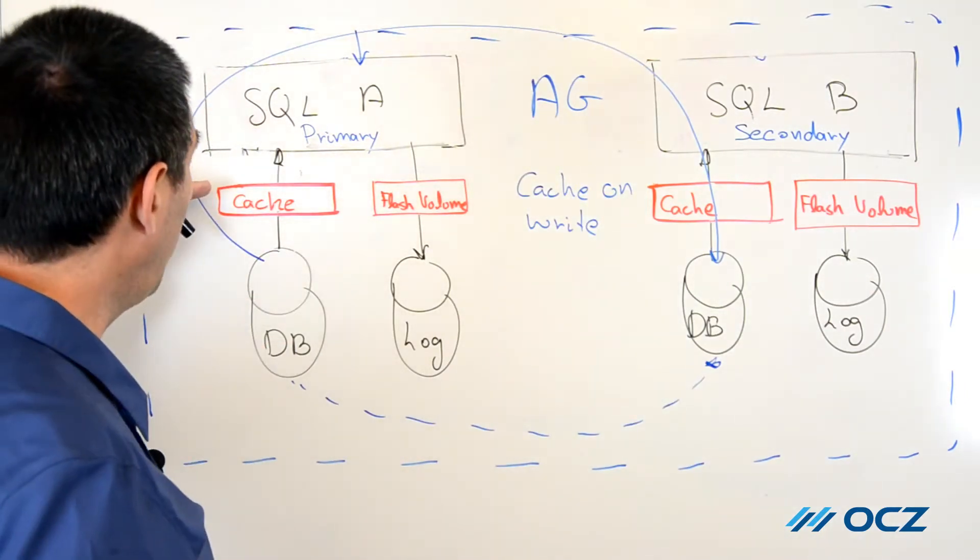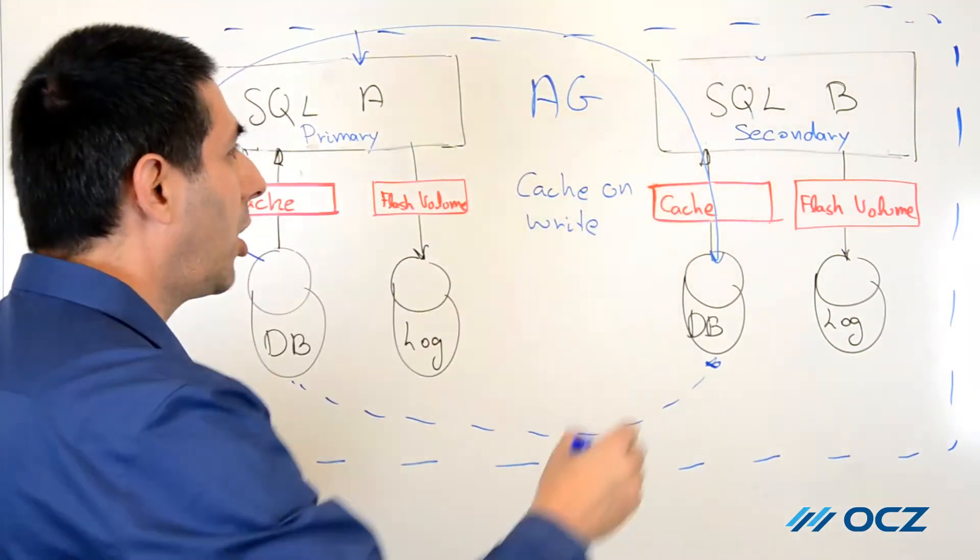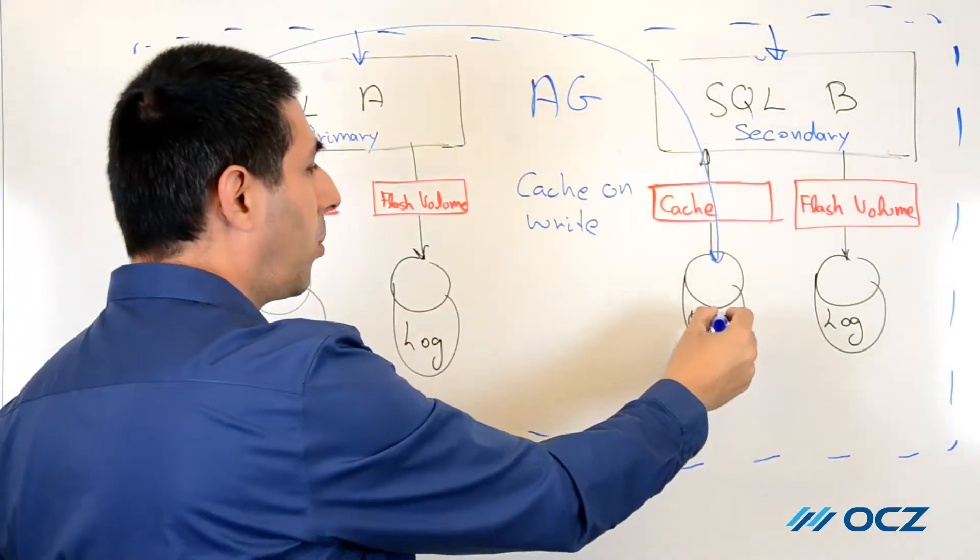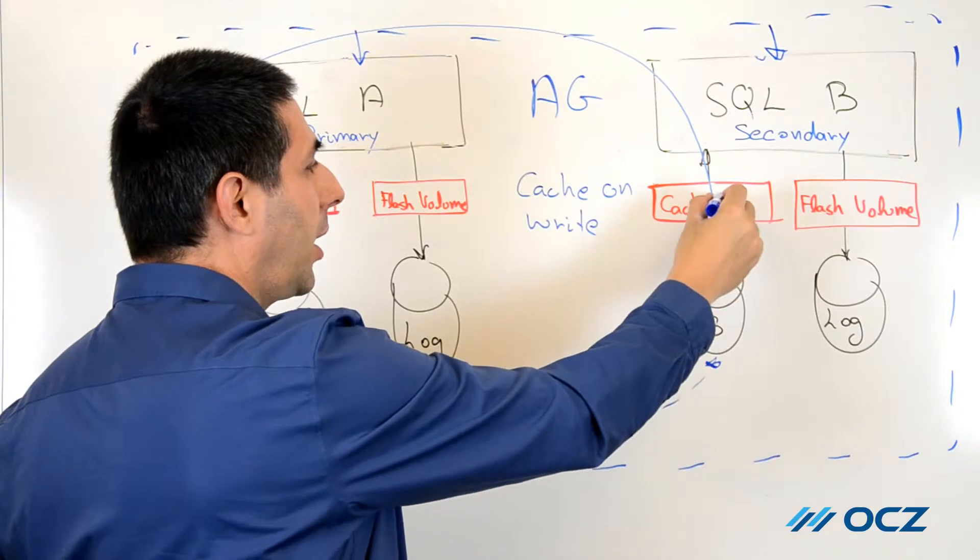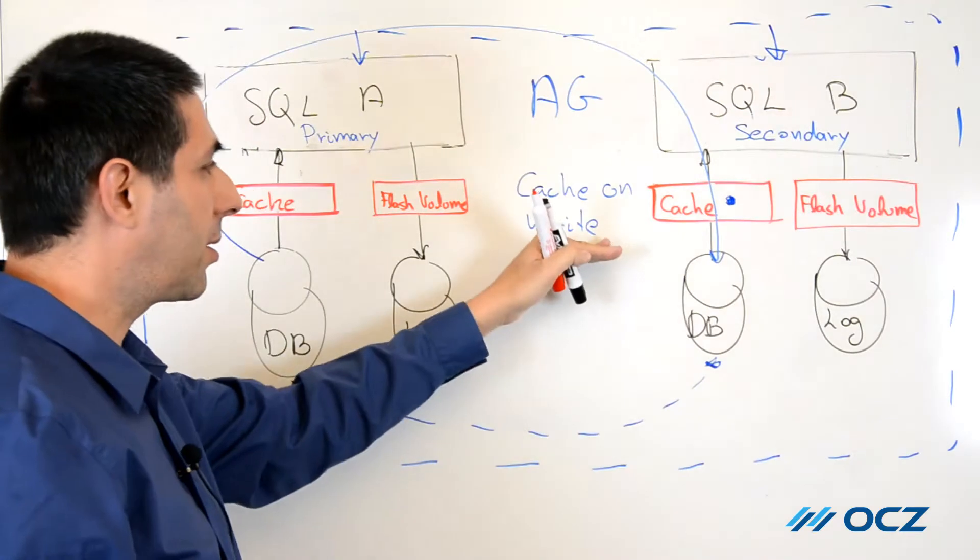The data from the primary will be inserted into the cache, and all the queries on the secondary that are processed will be brought from the database directly from the cache, as they were inserted due to the CacheOnWrite policy.